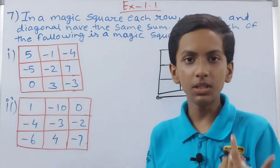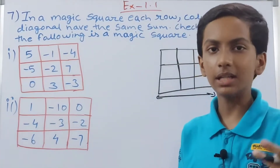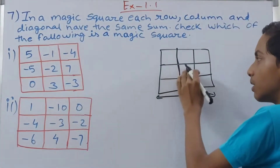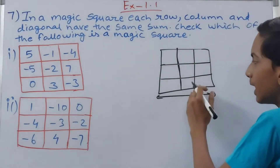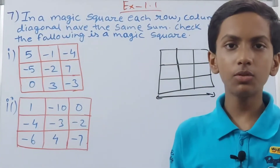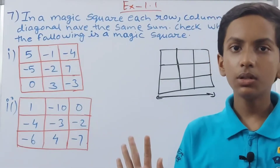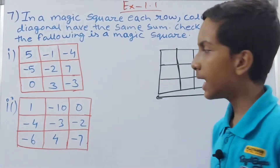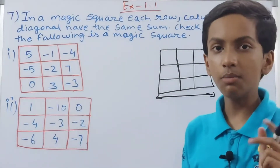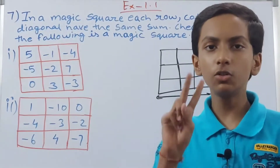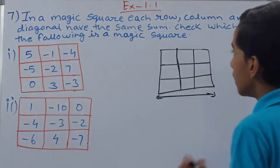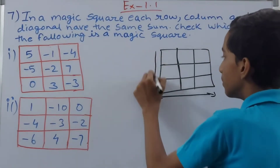So suppose you have any numbers in a row and you add them — say you get five as the sum in all three rows. They add up to the same value, so they satisfy the row condition of a magic square. But that's not complete; we have to check two more things.